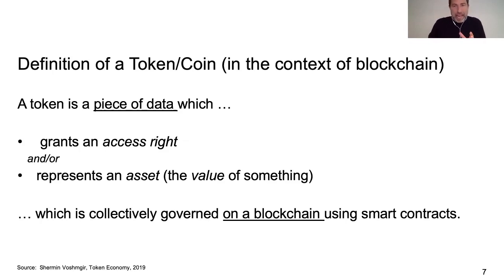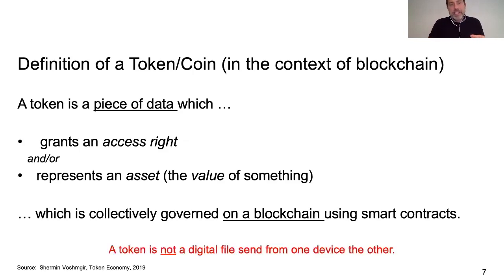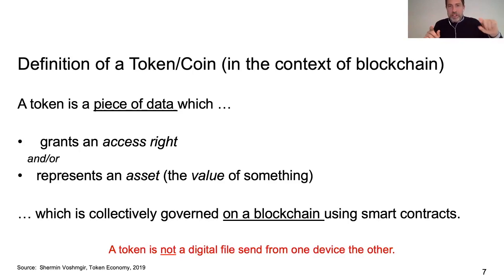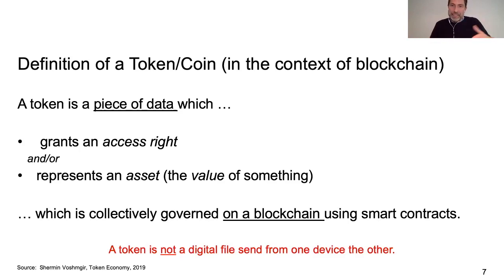To wrap up this definition, it's important to understand what a token is not. A token is not a digital file sent from one device to another. When I started out in the crypto space, I imagined that sending Bitcoin from wallet A to wallet B meant moving a file from one computer to another — but that's not how it works. The token always stays on the blockchain, and you access it using your private key.